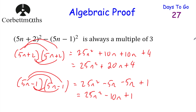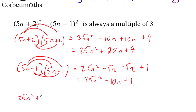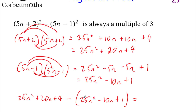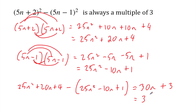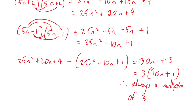Now we need to take these away from each other. So we've got (25n² + 20n + 4) subtract (25n² − 10n + 1) — I'm putting it all in a bracket because we're subtracting the whole thing. 25n² subtract 25n² is 0. 20n subtract negative 10n: when we subtract a negative, we're adding, so that's 20n + 10n = 30n. And 4 subtract 1 is 3, so plus 3. We've got 30n + 3. Factorizing: 3(10n + 1). Because we've taken 3 out, therefore it's always a multiple of 3.